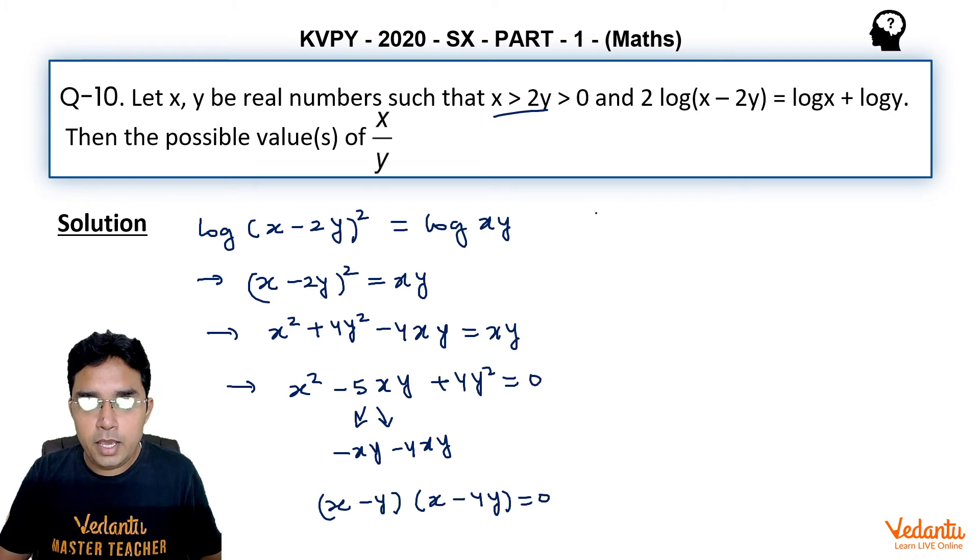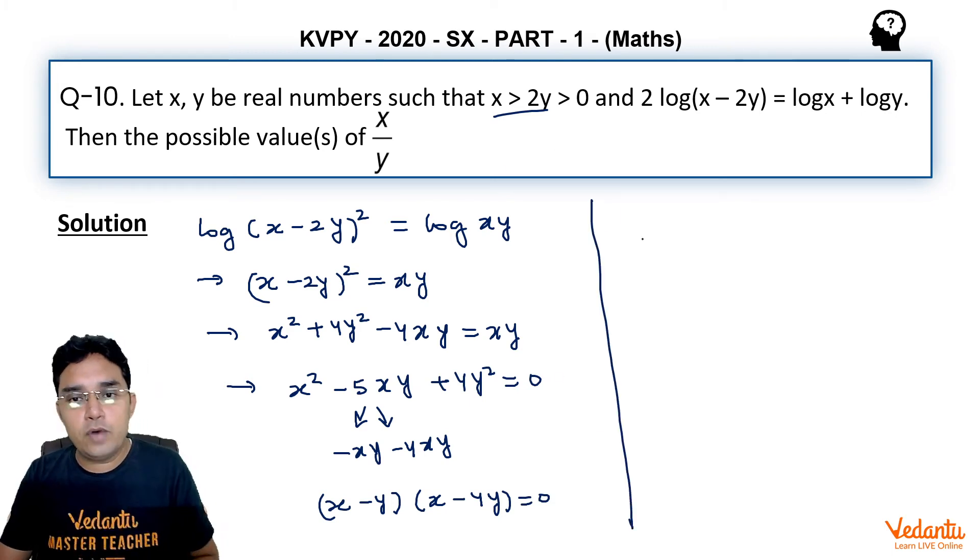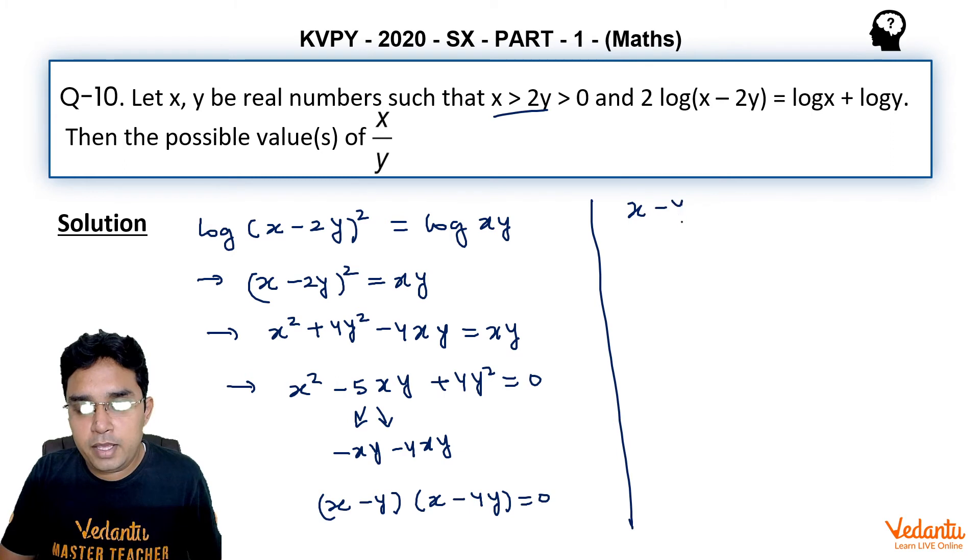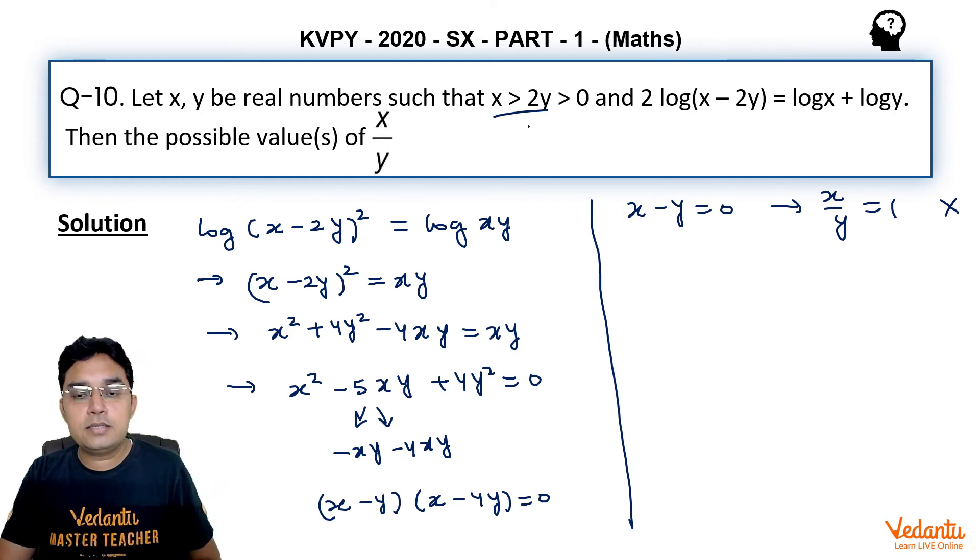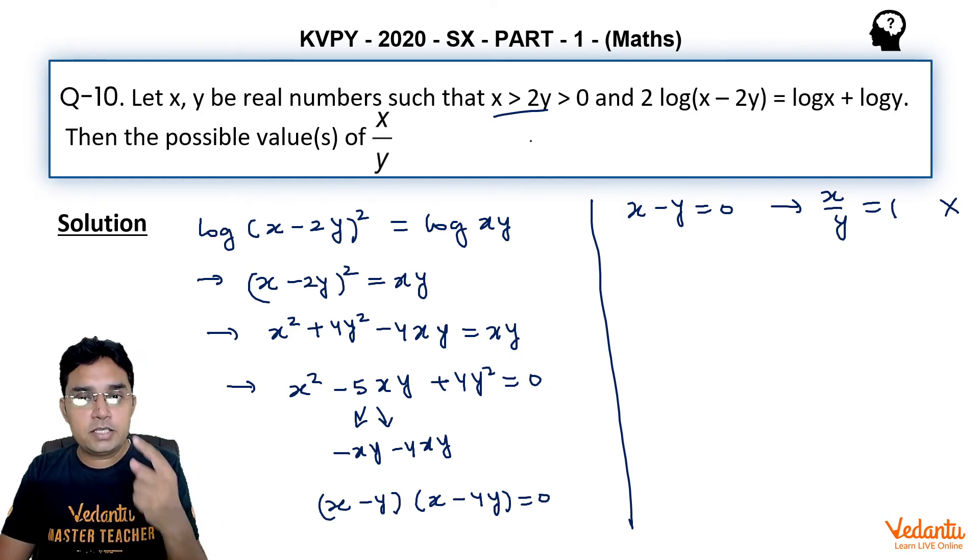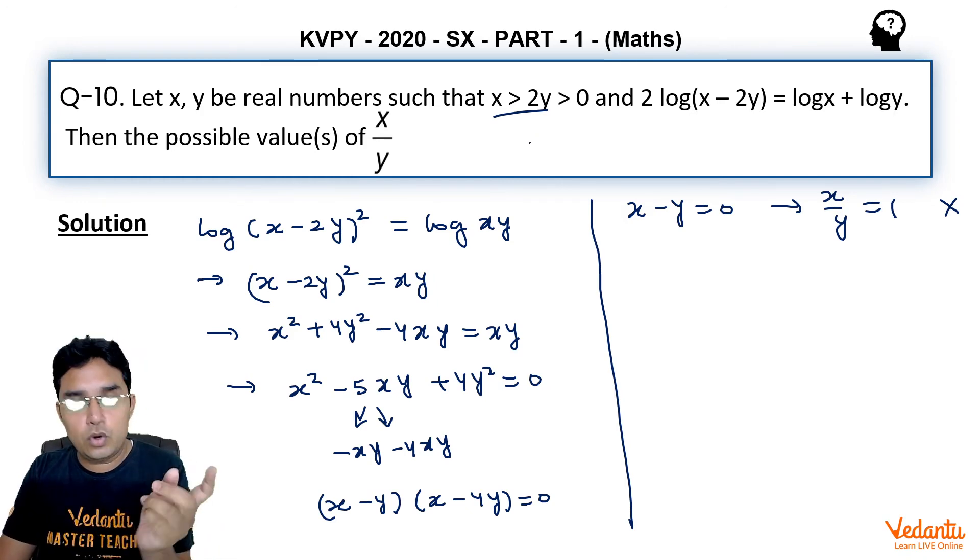Because we are given x > 2y, if x - y = 0, then x/y = 1. But this is wrong because x > 2y means x/y should be greater than 2 since everything is positive.